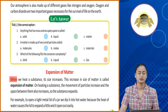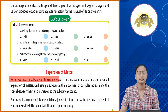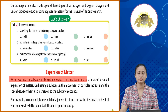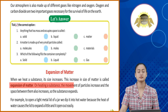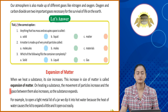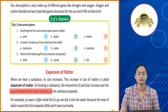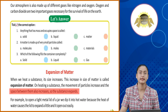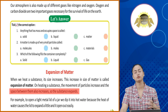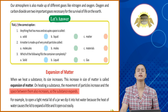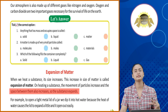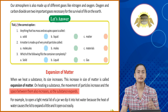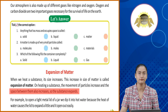Expansion of matter. When we heat a substance, its size increases. This increase in size of matter is called expansion of matter. On heating a substance, the movement of particles increases and the space between them also increases, so the substance expands. Toh kabhi bhi jab matter ko hum heat up karte hai, toh jitne bhi molecules hote hai woh bohat hi teazi se move karne lag jate hai aur inki bich ka jo space hai woh bhadne lag jata hai. Isi phenomena ko kehte hai expansion of matter.